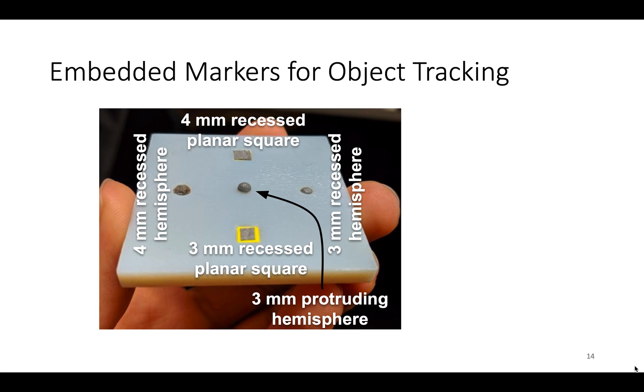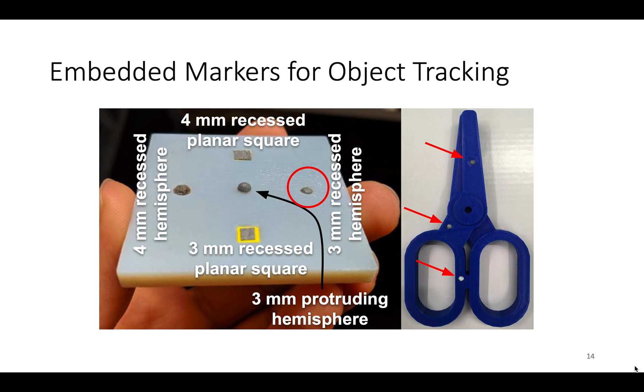Tracking requires attaching markers to the object surface, which can influence grasping behavior. We reduce this by embedding small hemispherical markers flush with the object surface. This offers a good compromise between unobtrusiveness and tracking performance.